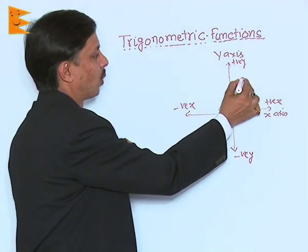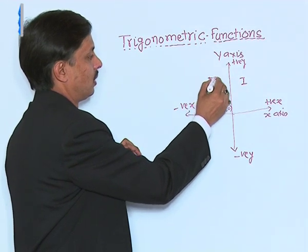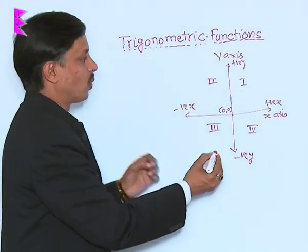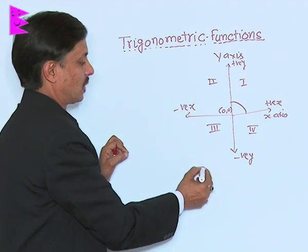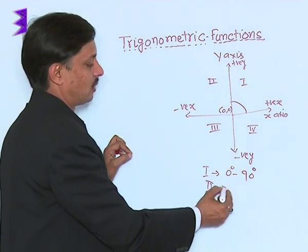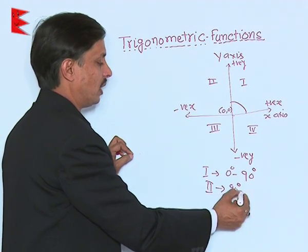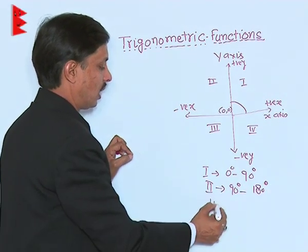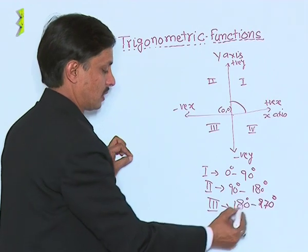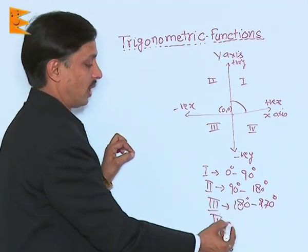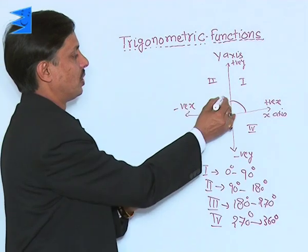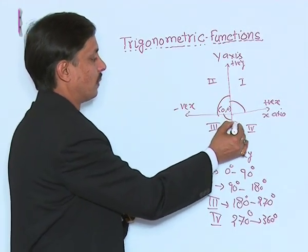The plane is separated into 4 quadrants. This is the first quadrant, second quadrant, third quadrant, and fourth quadrant. In the first quadrant, the angles are from 0 degree to 90 degree. In the second quadrant, the angles are from 90 degree to 180 degree. In the third quadrant, the angles are between 180 and 270 degrees. And in the fourth quadrant, the angles are between 270 degree and 360 degree. After 360 we come back to the first quadrant.